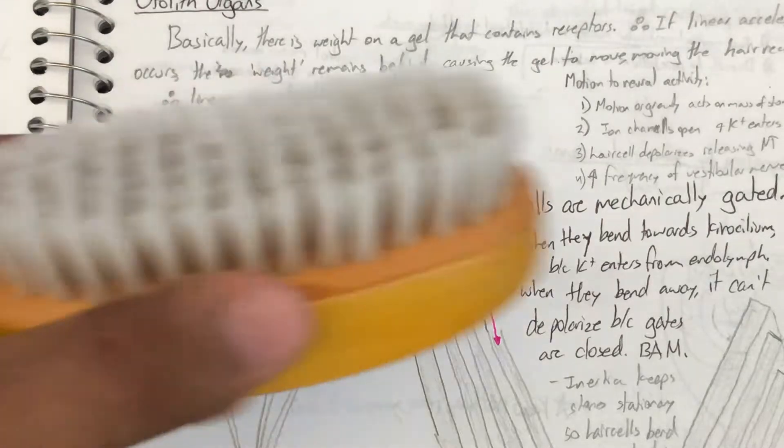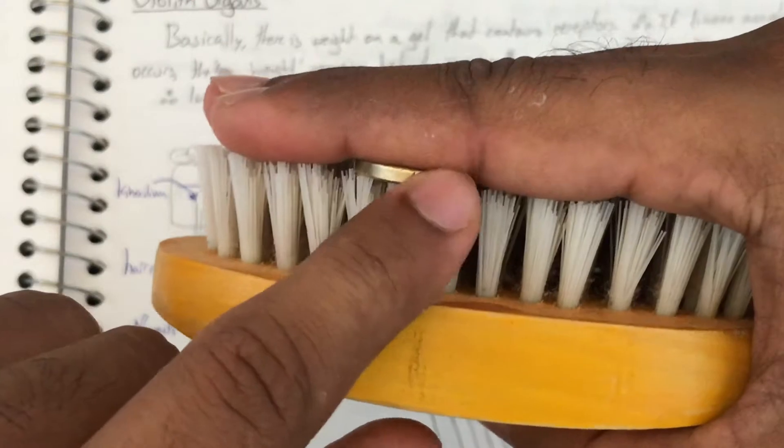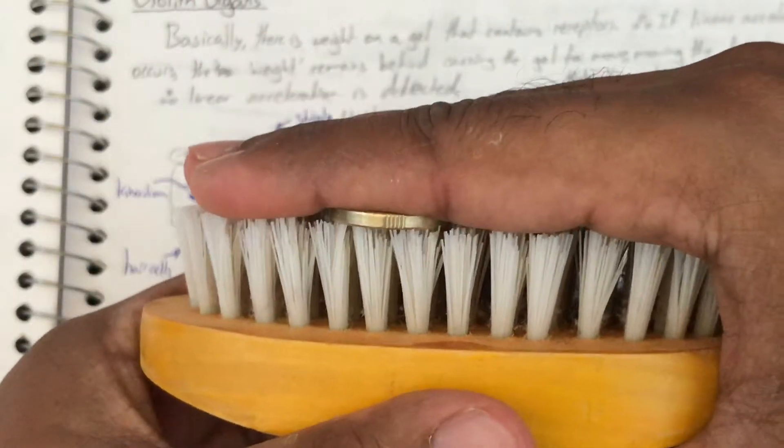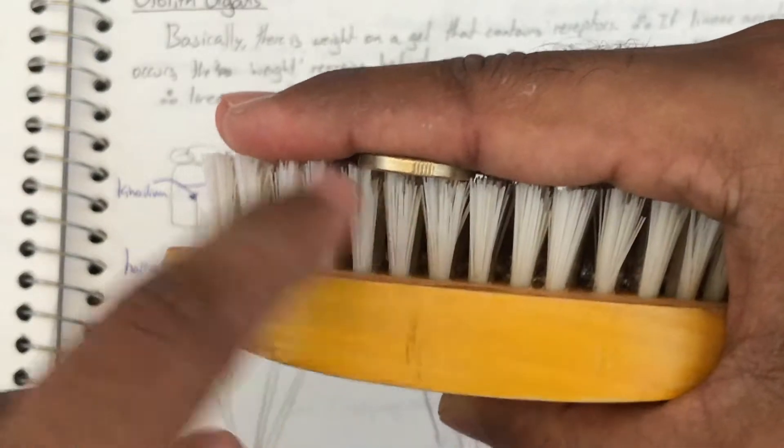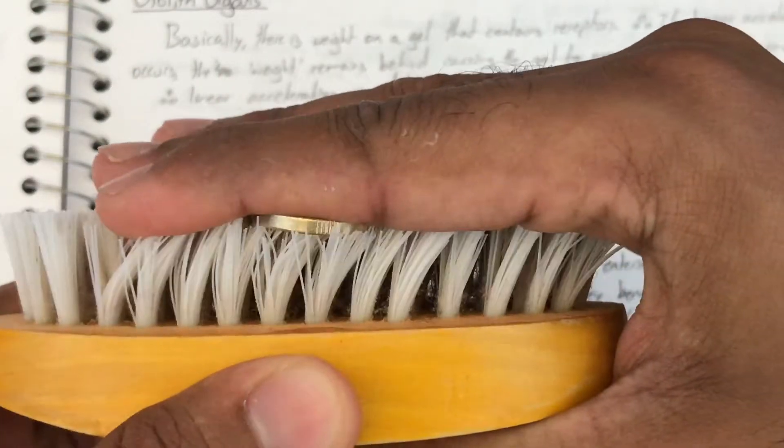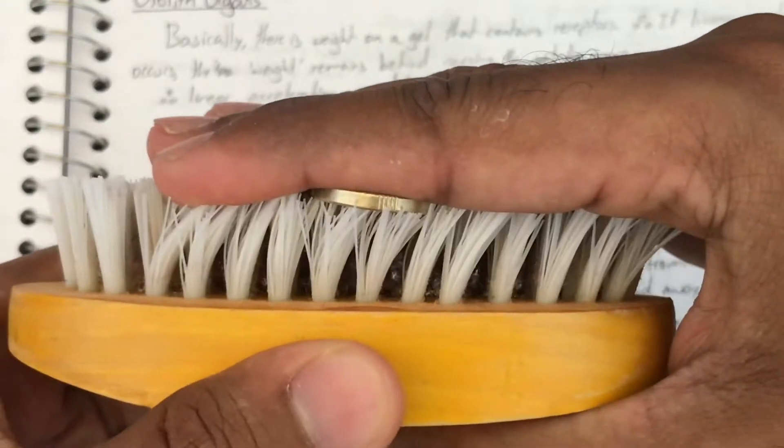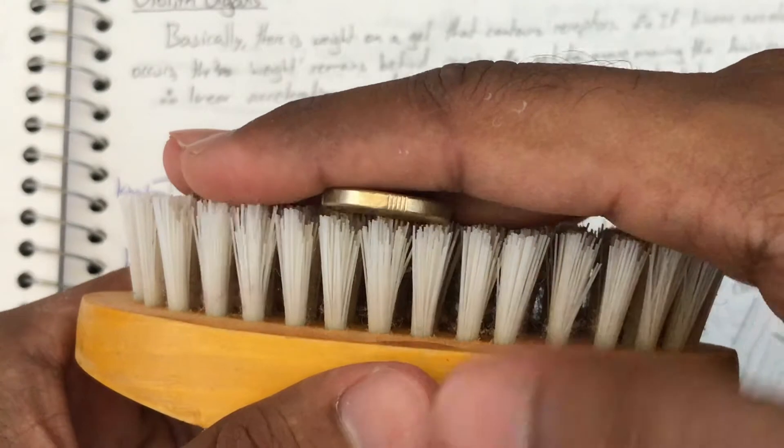But what happens with BPPV? So I have this diagram or model right here. Imagine this coin is the crystal and these are the hair cells. So when these hair cells move, it determines movement—something like that. This indicates that the person is moving in one direction.